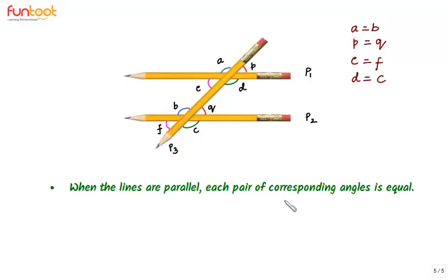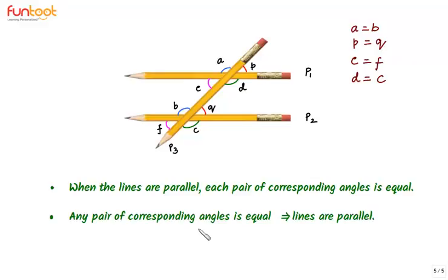Let's summarize what we have learned here. When lines are parallel, then each pair of corresponding angles is equal. If any pair of corresponding angles is equal, this implies lines are parallel.